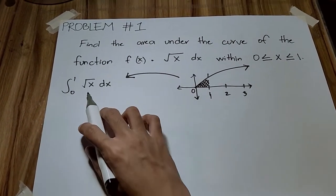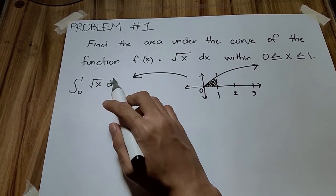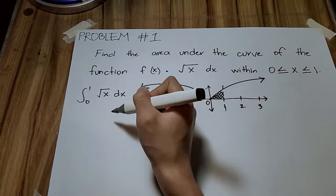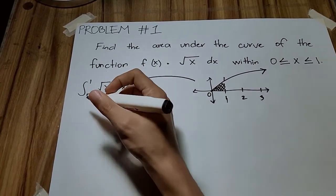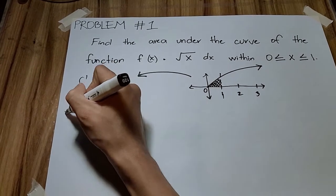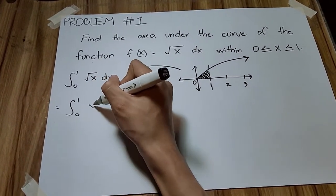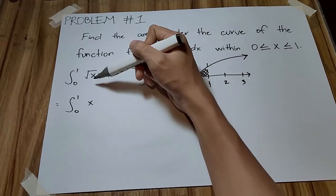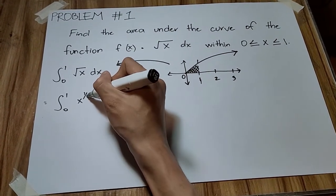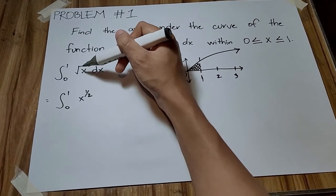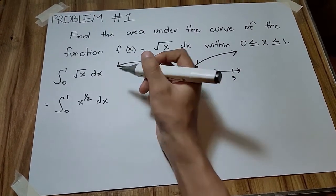Now, we all know that the equivalent exponent value of a square root is 1 half. So we can simplify it by writing the integral from 0 to 1 of x to the power of 1 half dx, changing the square root sign into an exponent of 1 half.